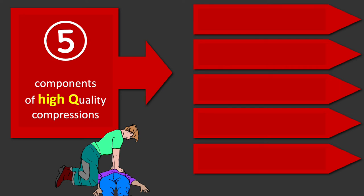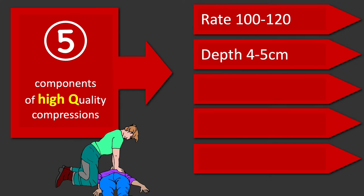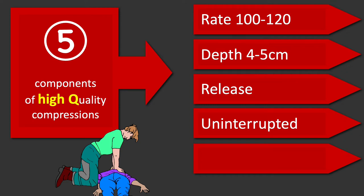Advanced life support interventions are pointless if basic life support interventions are inadequate. High quality compressions are vital to excellent BLS. There are five components of high quality compressions. The rate of compressions for infants and children is 100 to 120 compressions per minute. The depth is 4 to 5 cm — 4 cm in infants and 5 cm in children. Allowing for full chest recoil is important for adequate ventricular filling and coronary perfusion. Compressions should be uninterrupted, and minimizing interruptions should be the aim. The use of feedback methods to improve the quality of CPR is also encouraged.